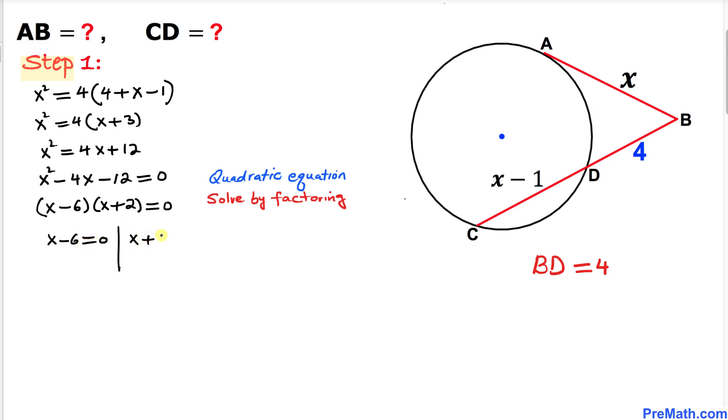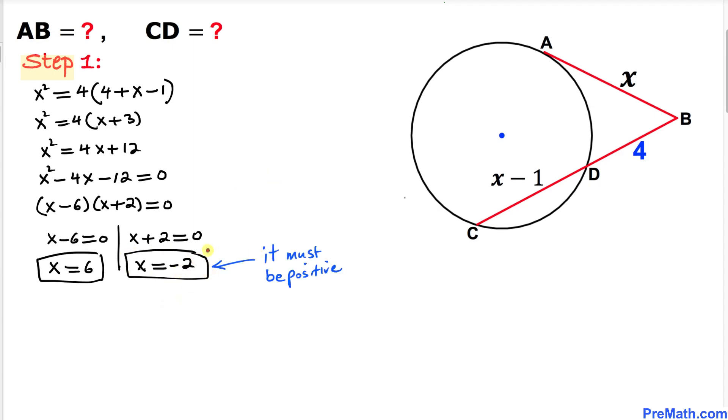So that means our x value turns out to be positive 6, and on this side, x equal to negative 2. Now we can see over here this x must be positive since this represents the length. So therefore, we are going to accept this x equal to positive 6 value.